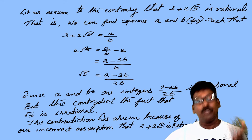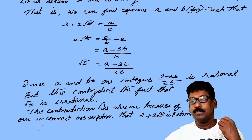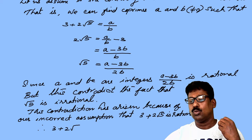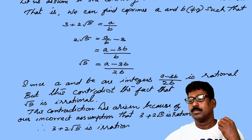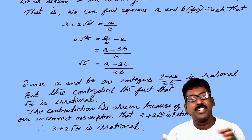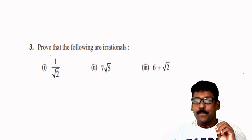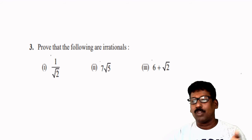So we can conclude: therefore, 3 plus 2 root 5 is irrational. This kind of question you can do in the same way. Here are the questions from exercise 1.3, third question — there are three questions.